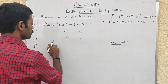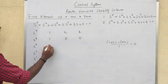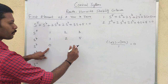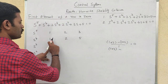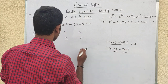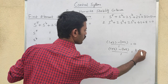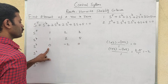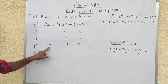Computing the next row: 1 into 2 minus 1 into 2, divided by 1, equals zero. Then 1 into 3 minus 1 into 5, divided by 1, equals 3 minus 5 equals minus 2. So the S³ row has a first element of zero.